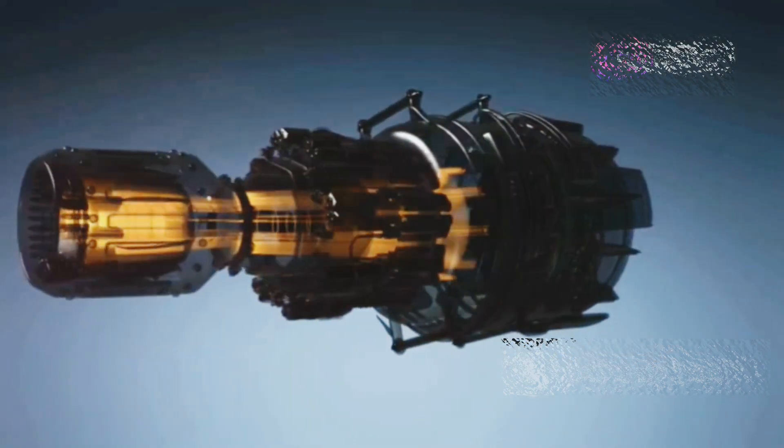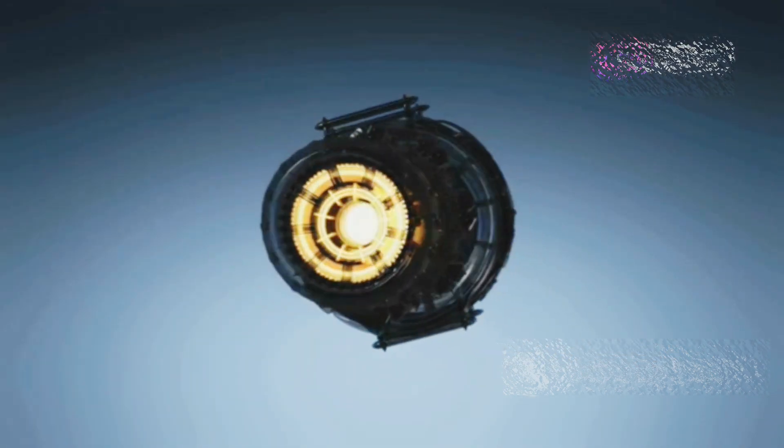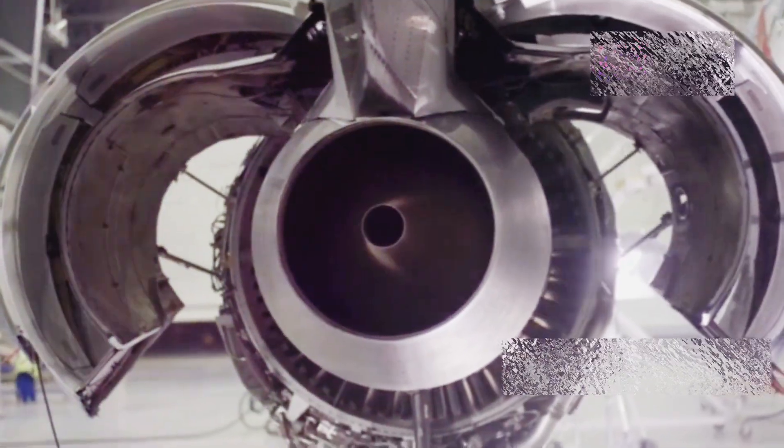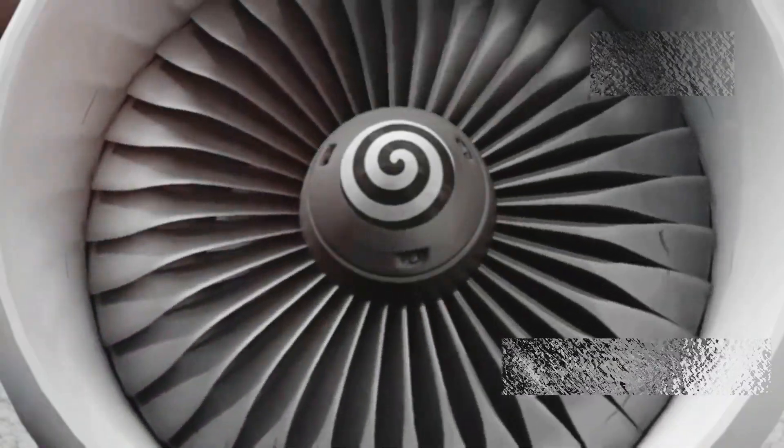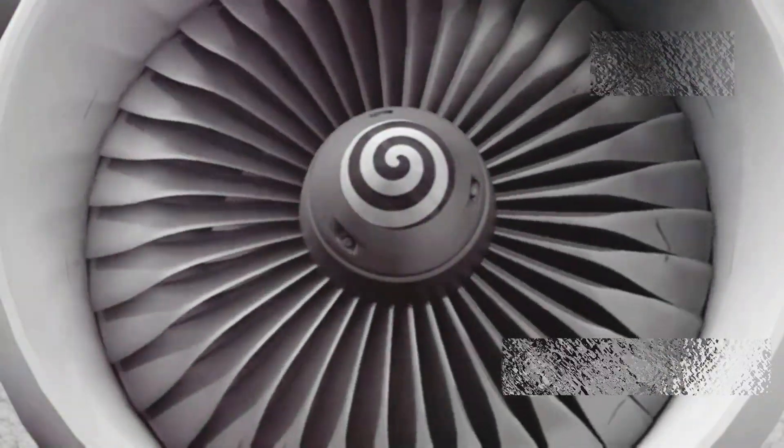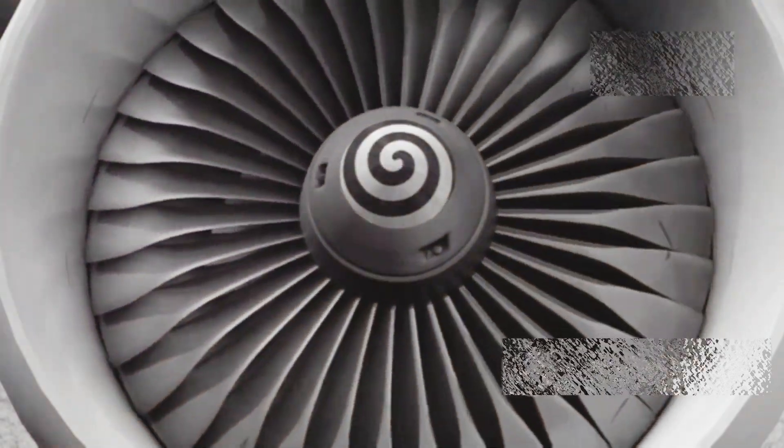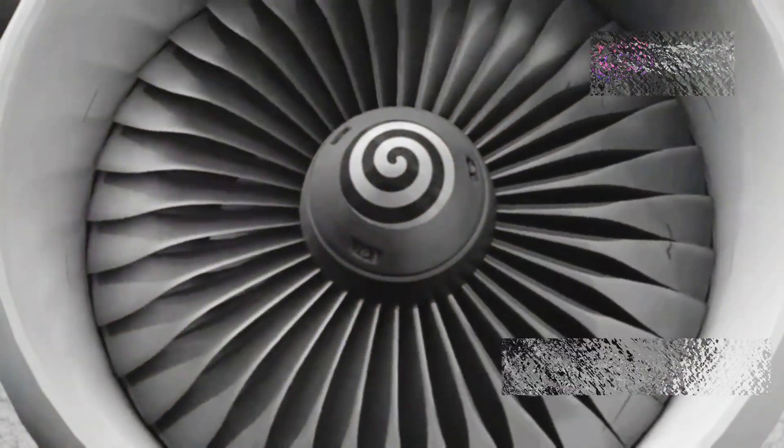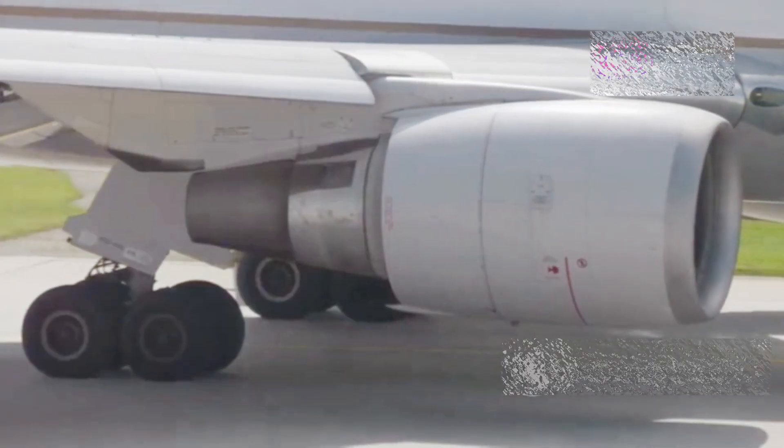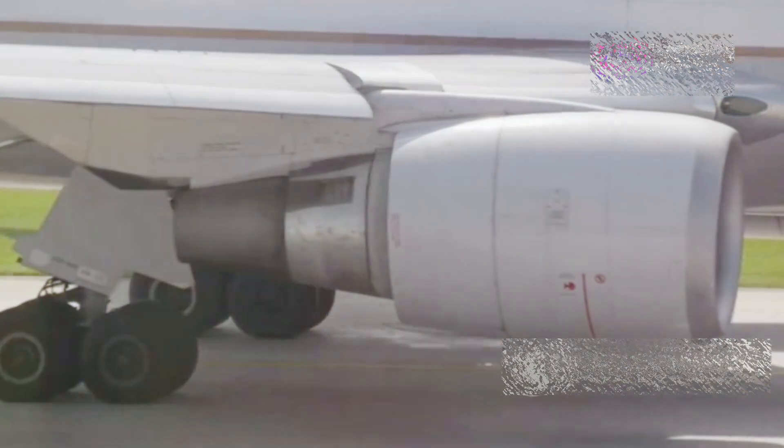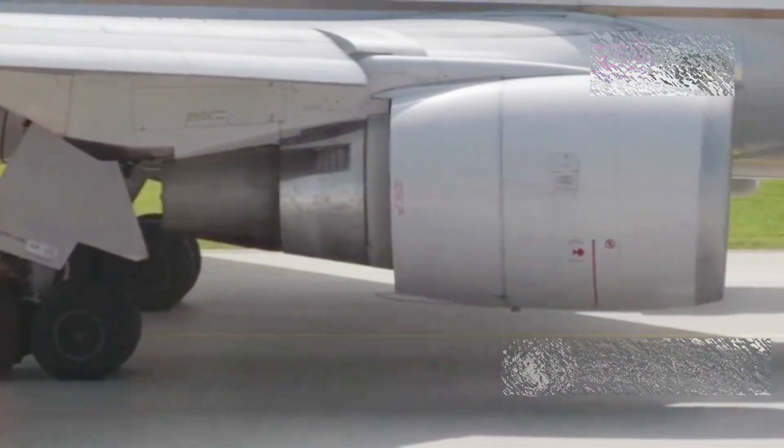This air is crucial because it provides the oxygen needed for combustion, which is like the boom that makes the engine go. The shape of the air intake is carefully designed to maximize the amount of air that can be drawn in, kind of like how a funnel helps you pour liquid into a small opening without spilling. So, the next time you see a jet engine, remember that it all starts with a big gulp of air.